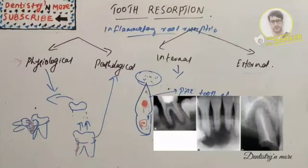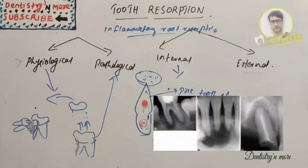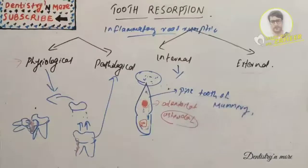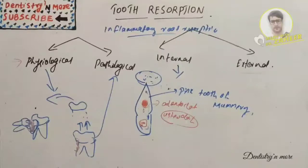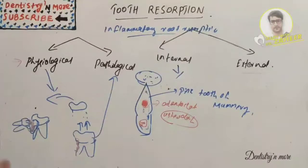The symptoms of tooth resorption are mostly asymptomatic. Sometimes there will be a dull ache, discoloration, bad breath, or loosening of the damaged tooth.